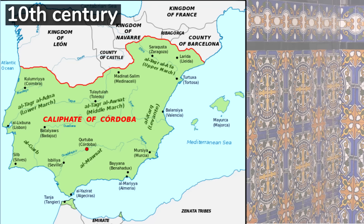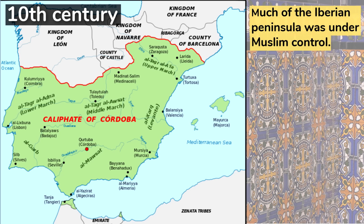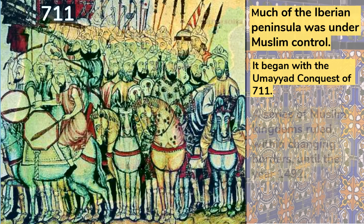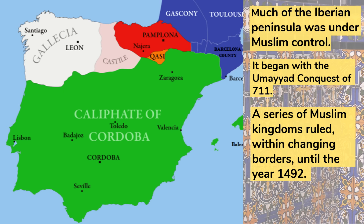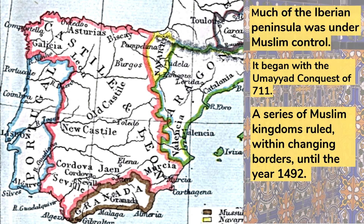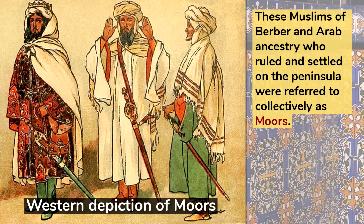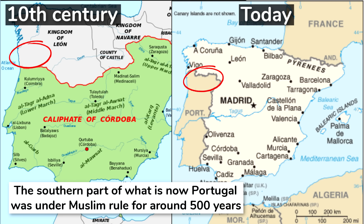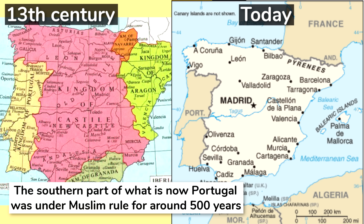But during that time period when these dialects were developing into distinct languages, much of the Iberian Peninsula was under Muslim control, which began with the Umayyad conquest in the year 711. A series of Muslim kingdoms ruled, within changing borders, until the year 1492. These Muslims of Berber and Arab ancestry, who ruled and settled on the peninsula, were referred to collectively as Moors. The southern part of what is now Portugal was under Muslim rule for around 500 years, while the northern part returned to Christian rule much sooner. Portugal was fully reconquered from the Moors by the year 1249.